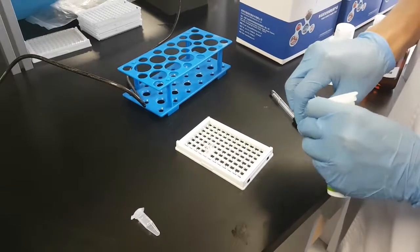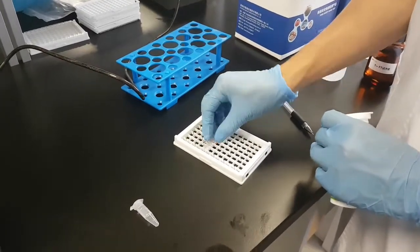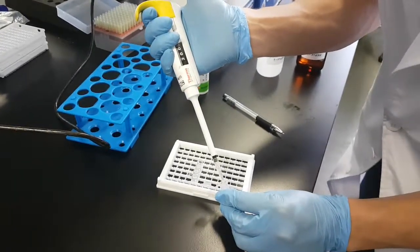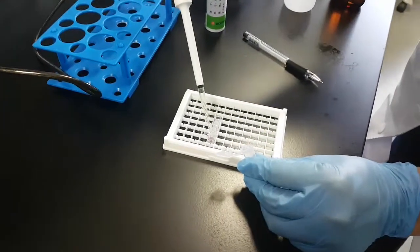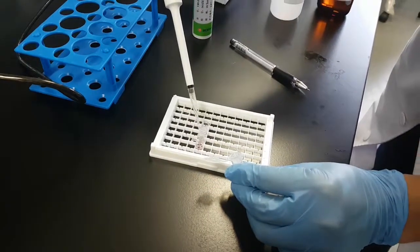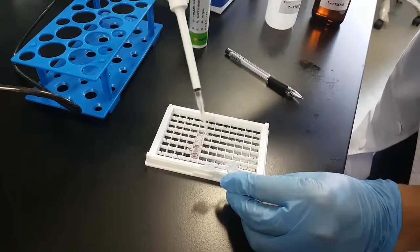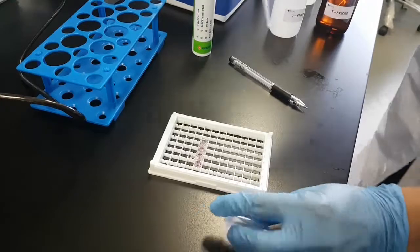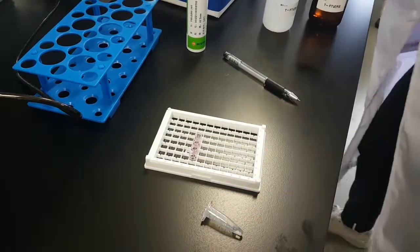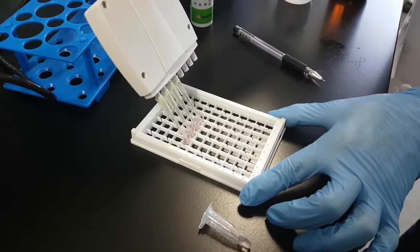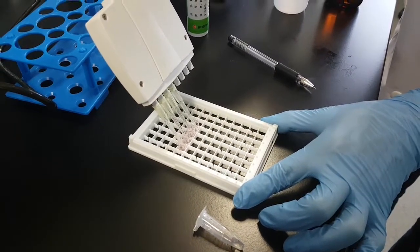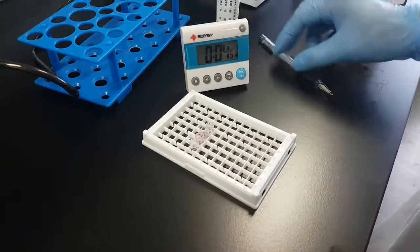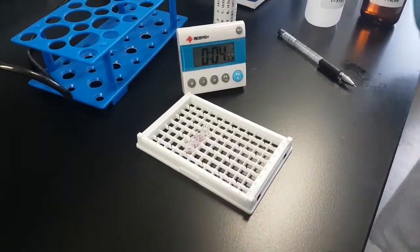Now next step will be testing. Take the number of microwells you need. Take 200 microliters of the detection sample and put it into the red microwells, 200 microliters to each red microwell. Mix well for 5 to 10 times. Incubate for 5 minutes, that will be our first incubation.